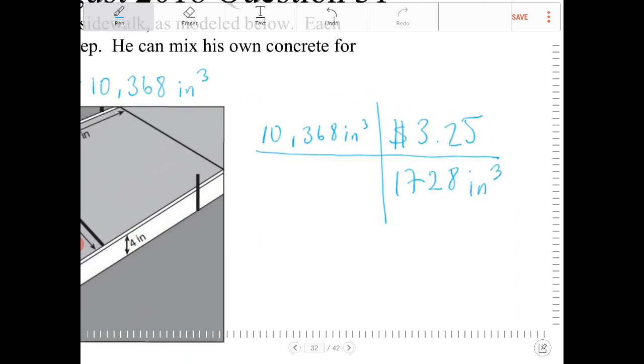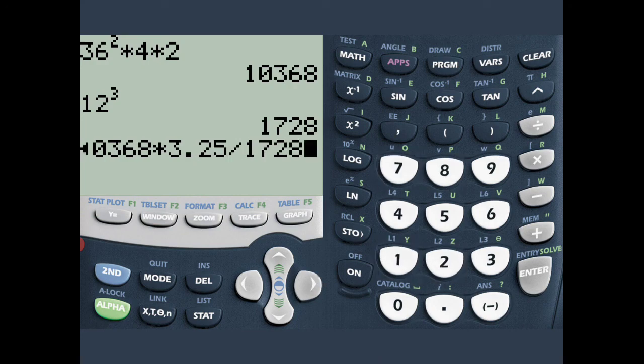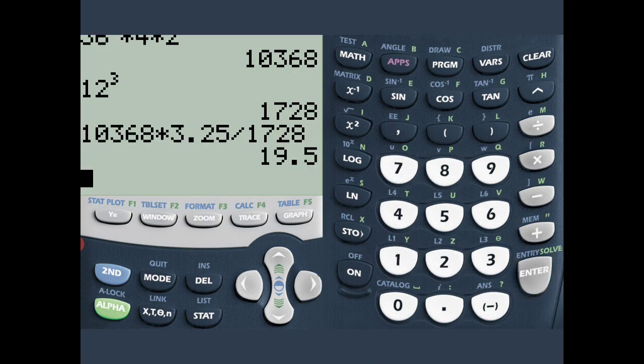So let's figure out what this is. We're going to multiply 10,368 by 3.25, and then divide by 1728. And that would be $19.50.